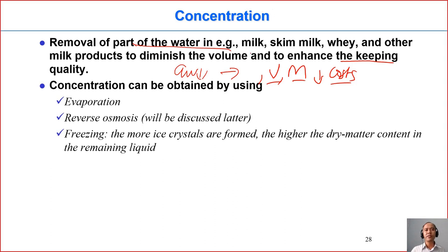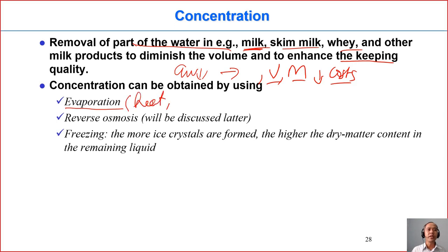Concentration is applied, for example, in milk, in skim milk, in whey, and other milk products. We can do concentration by evaporation. Evaporation means we use heat to evaporate water. Water from liquid will be converted into vapor and be removed away. This is a heat process.